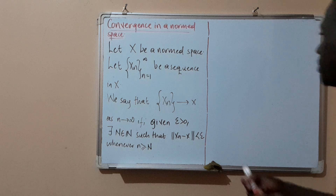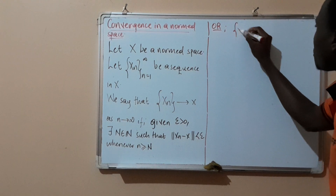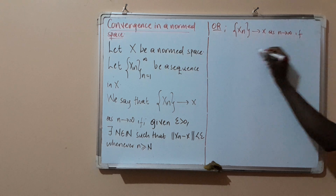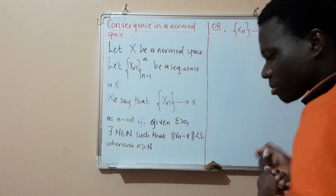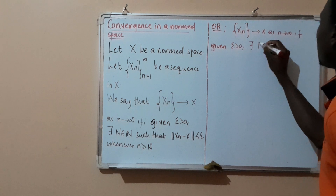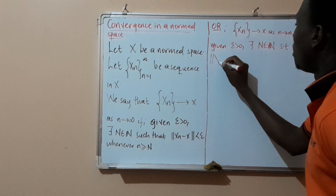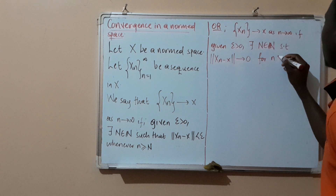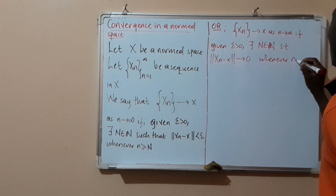Similarly, we can say that x_n converges to x as n goes to infinity if, given epsilon greater than zero, there exists a natural number N such that the norm of x_n minus x goes to zero — that is, this norm is less than epsilon whenever n is greater than or equal to N.